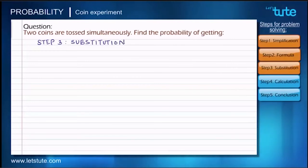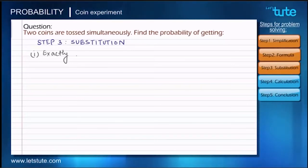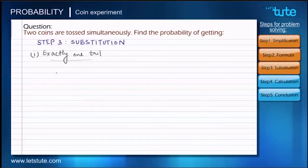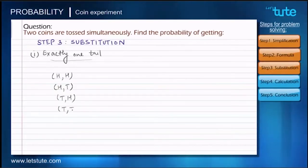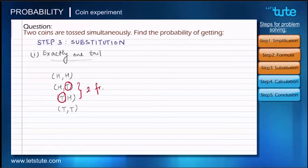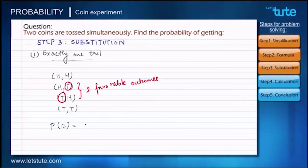Step 3 is the substitution step. Let's take the first sub-question: find the probability of getting exactly one tail. We need to list all outcomes. When tossing two coins we get 4 possible outcomes. Out of these, we have to see which outcomes give exactly one tail. We get exactly one tail in outcomes number two and three, so there are two favorable outcomes. We substitute in the formula: number of favorable outcomes divided by total possible outcomes, giving us 2 upon 4.